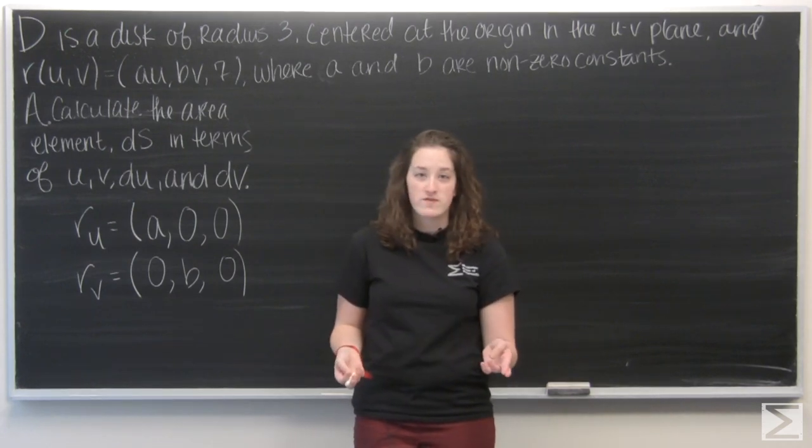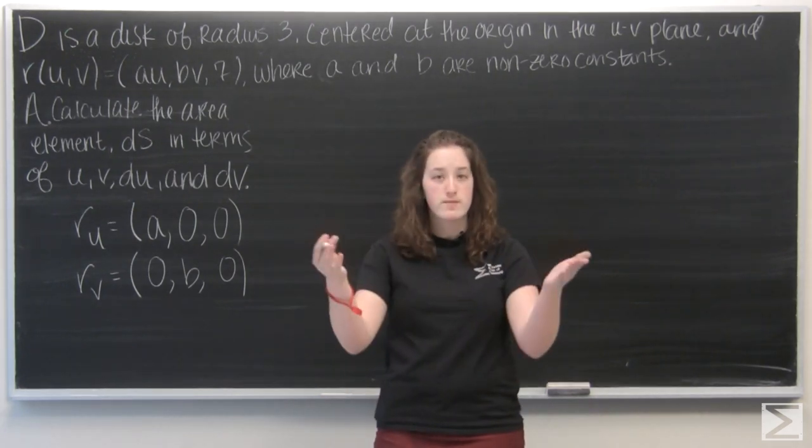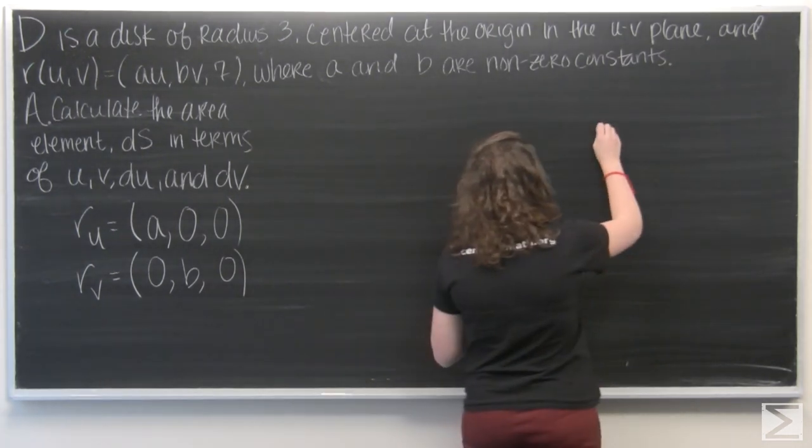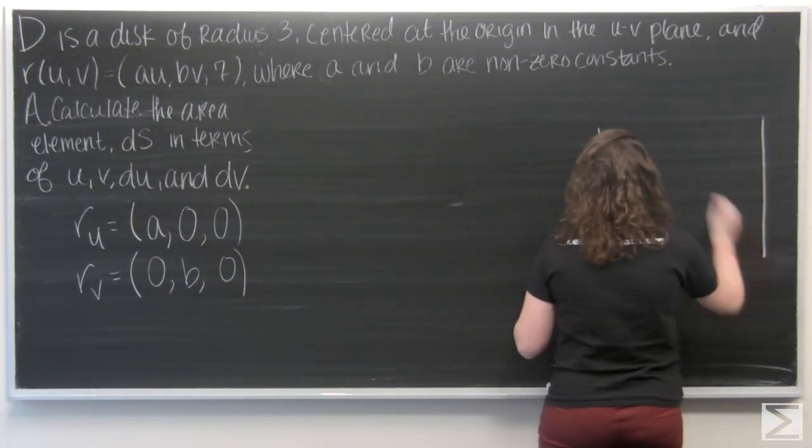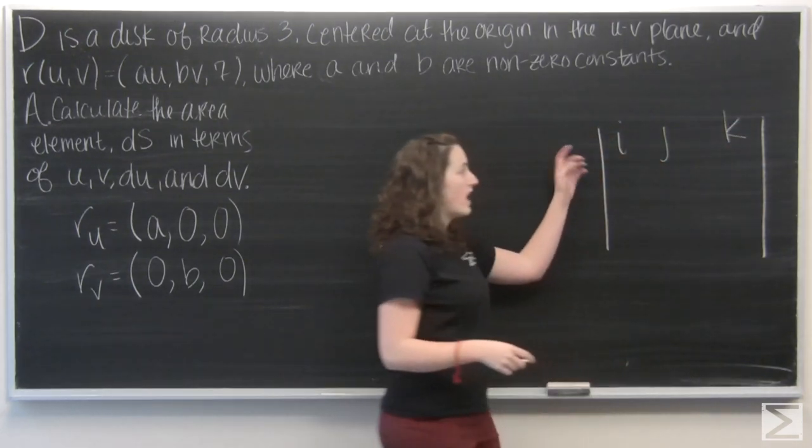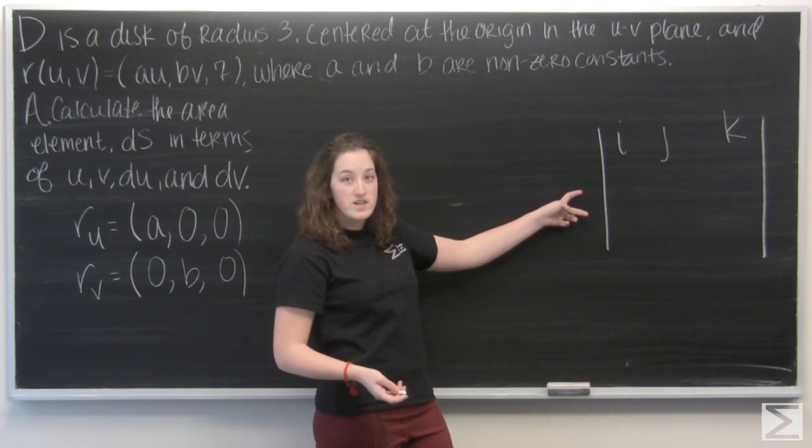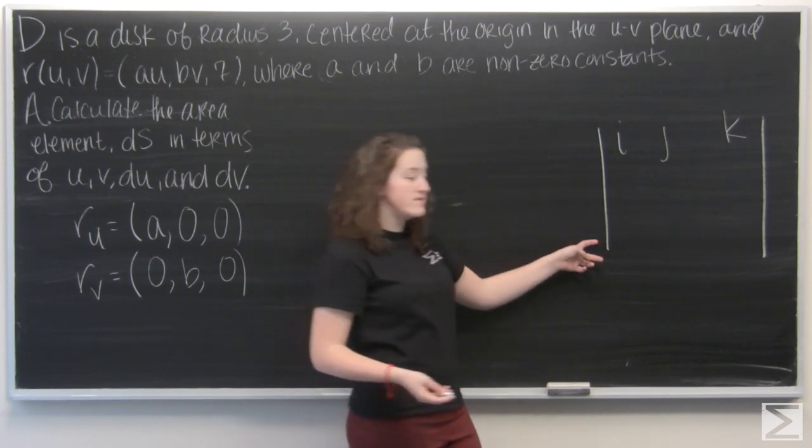So we want to take the cross product of those two vectors to get our area element. So I'm going to do it with a matrix. So I have i, j, and k on the top row, then I'm going to have the partial derivative with respect to u, and then the partial derivative with respect to v.